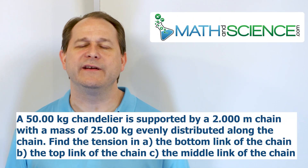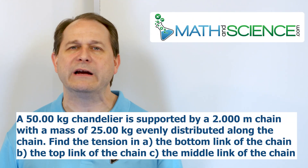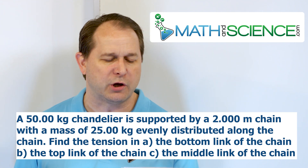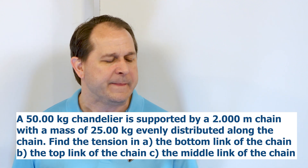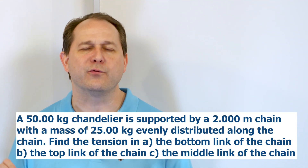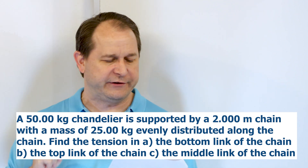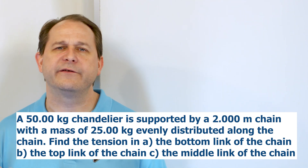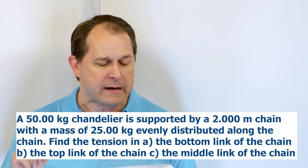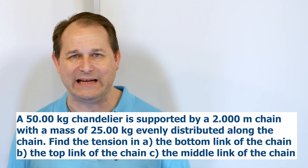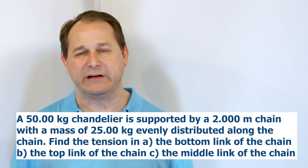A 50.00 kilogram chandelier is supported by a 2.00 meter long chain with a mass of 25.0 kilograms that is evenly distributed throughout the length of the chain. We have three questions. The first one says find the tension in A, the bottom link of the chain; B, the tension in the top link of the chain; C, the tension in the middle link of the chain.